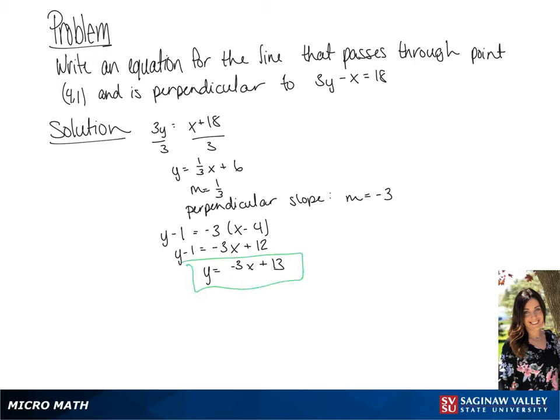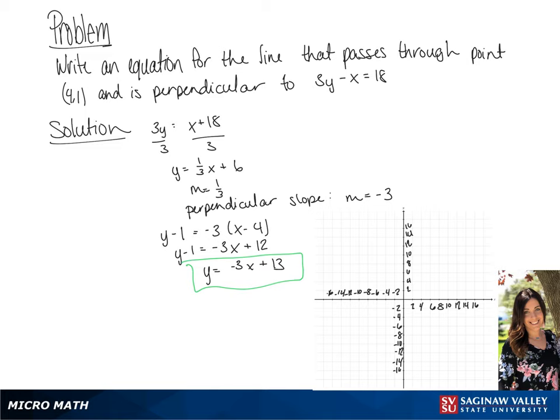We're going to graph this using the point that we were originally given as well as the y-intercept. So we have 4, 1 and we have our y-intercept of 13.